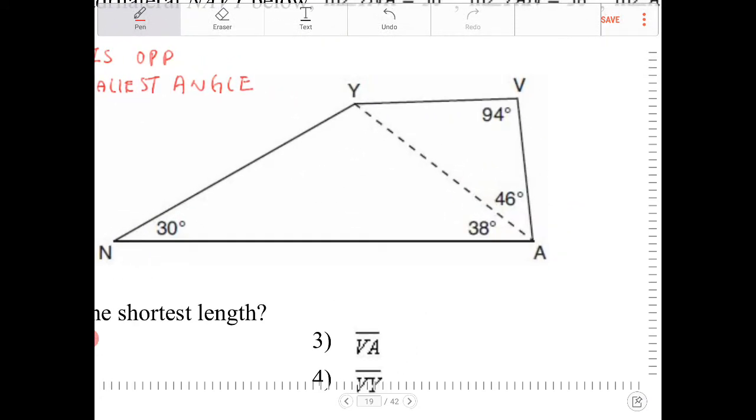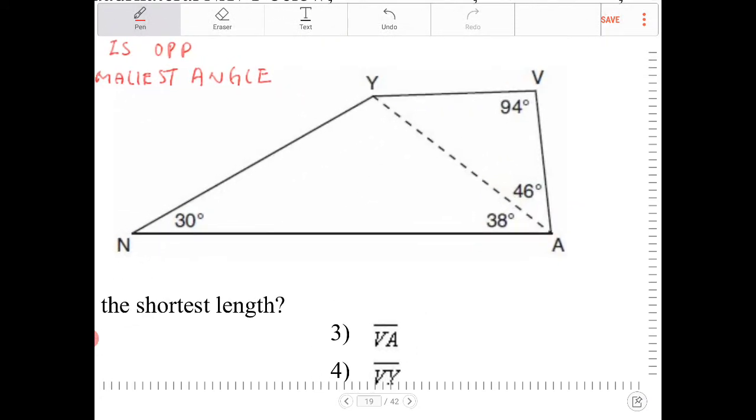So looking at this, we have triangle NAY. The base angles are 30 and 38. The remaining angle must be 112 degrees, because 30 and 38 makes 68, and the angle supplementary to that is 112. Based on this analysis, I can conclude that AY must be the shortest length.